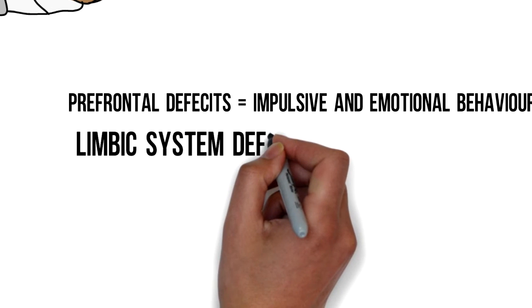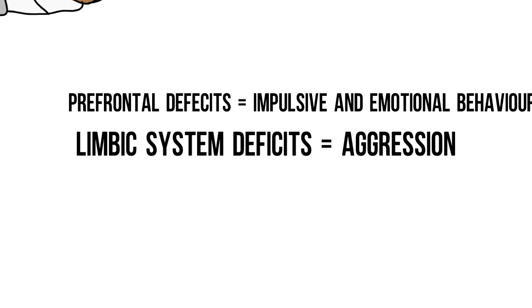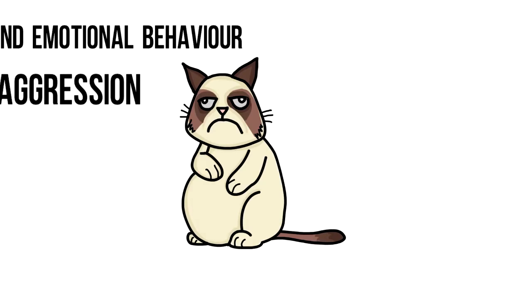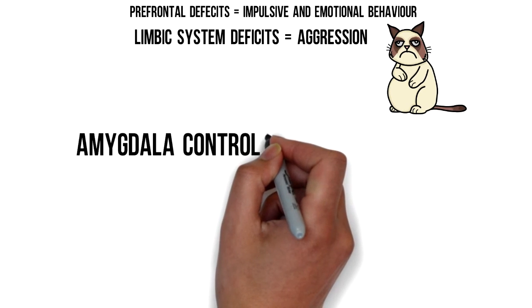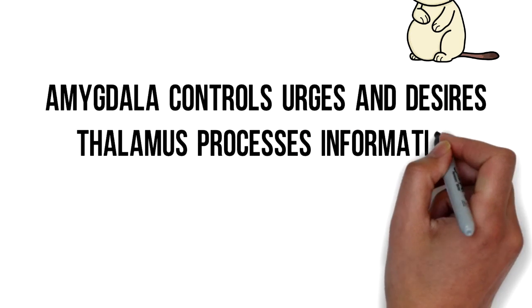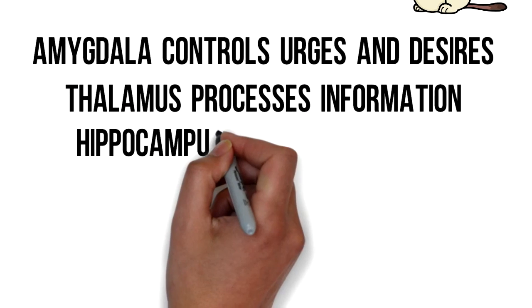Deficits in the limbic system might make someone more aggressive and this was also observed in cats. The amygdala controls urges and desires whilst the thalamus processes information and the hippocampus processes memory.